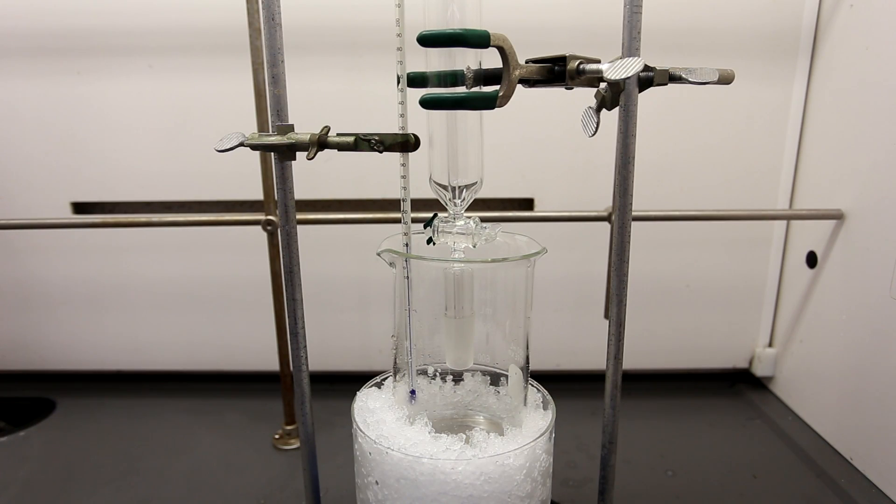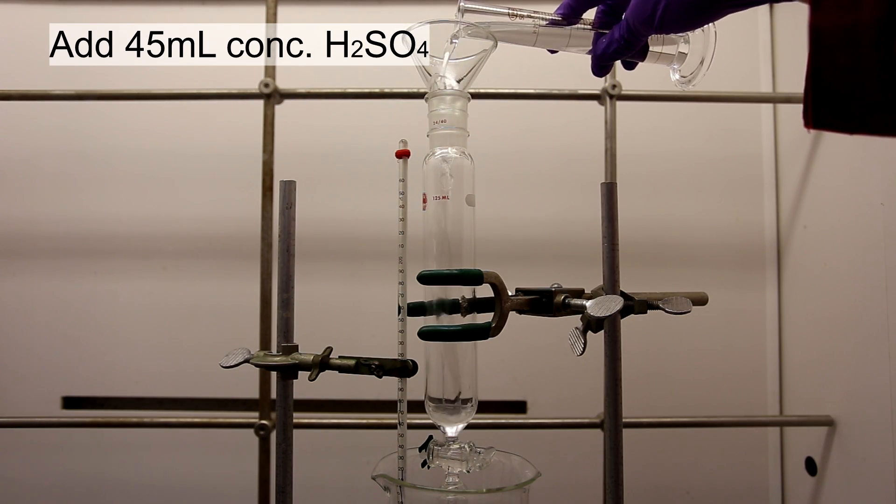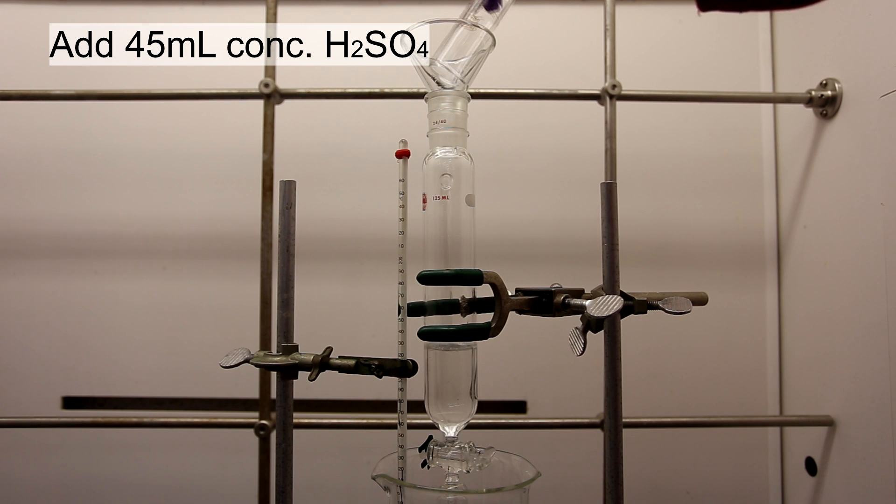I placed the beaker in ice and set up an addition funnel above it. It is also very important to include a thermometer in the reaction solution. To the addition funnel, I added 45 milliliters of concentrated sulfuric acid.